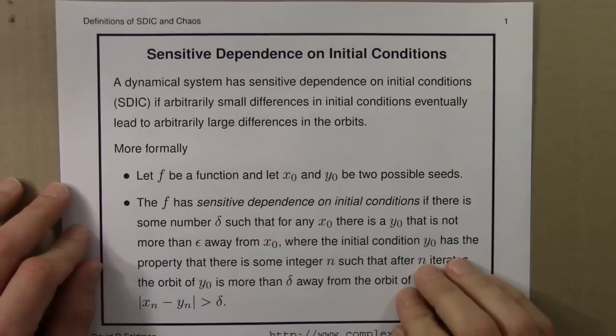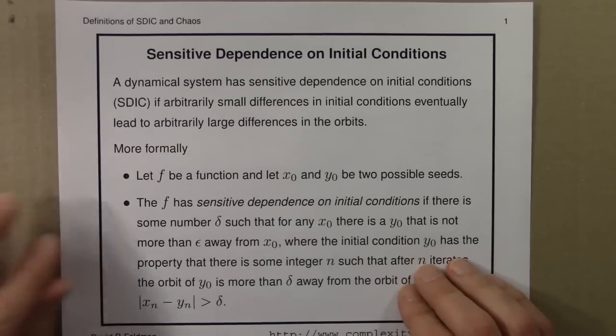We've seen two examples of the butterfly effect, or sensitive dependence on initial conditions. The first example was the logistic equation with r equals 4, and the second example was the Lorenz equation, a differential equation. So now, let me define sensitive dependence on initial conditions, SDIC, a little more carefully, and then I'll be in a position to define chaos more carefully.